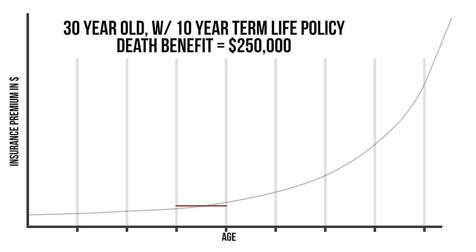So what that would mean is they would pay $15 every month for the next 10 years for the same $250,000 death benefit should he die. In year 11, which would be the beginning of the second 10-year term, the premiums would increase to maybe $100 per month if they kept their policy.